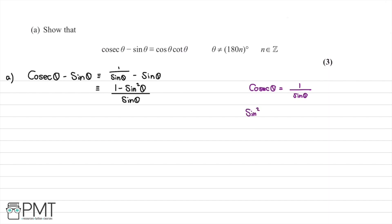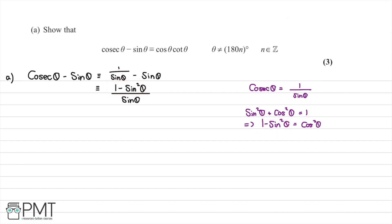Now we've combined this into one single fraction, we use the Pythagorean identity: sine squared theta plus cos squared theta equals one. Therefore, one minus sine squared theta is equal to cos squared theta. We have one minus sine squared theta in our numerator, so we can substitute this in, giving us cos squared theta divided by sine theta.